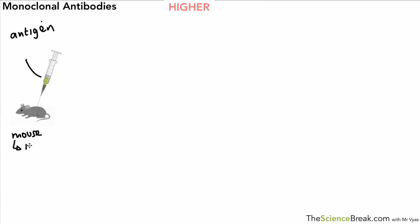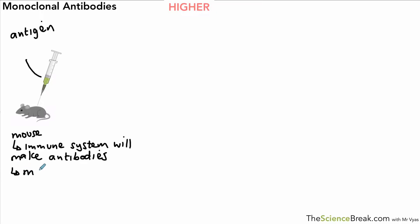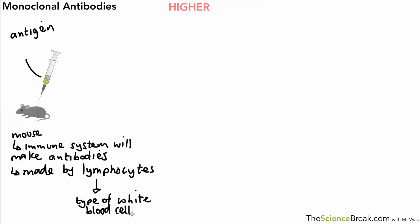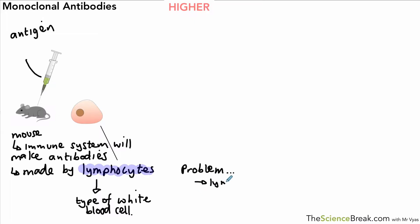We let the mouse's immune system produce antibodies for that particular antigen. The antibodies are produced by a particular type of white blood cell called a lymphocyte. So the lymphocyte produces the antibody that we want. However, there's a problem: while the lymphocyte can produce the antibody we want, it does not divide very well. Lymphocytes don't divide and make copies of themselves well at all.